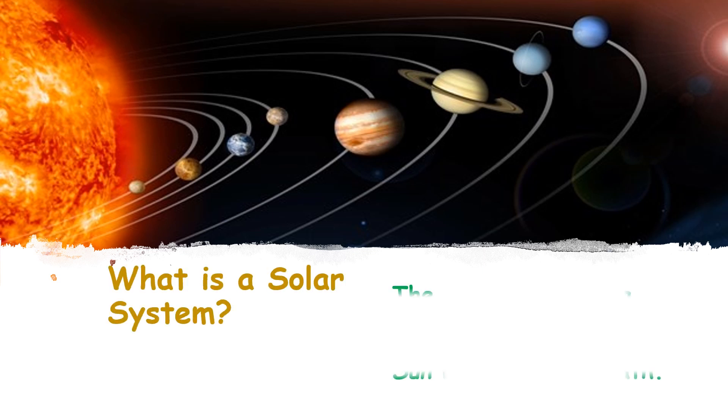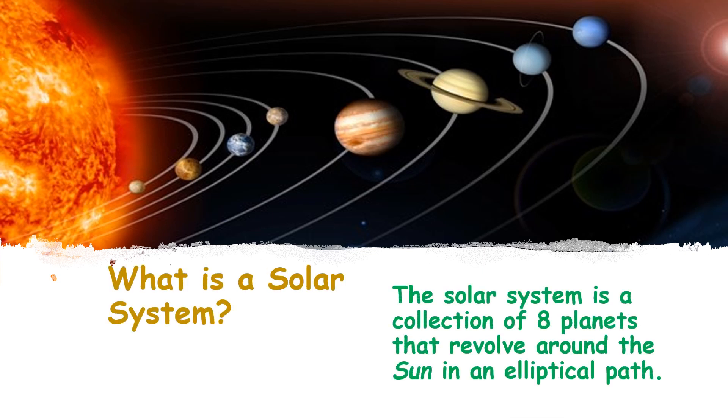Let us say children, what is the solar system? The solar system is a collection of eight planets that revolve around the sun in an elliptical path.